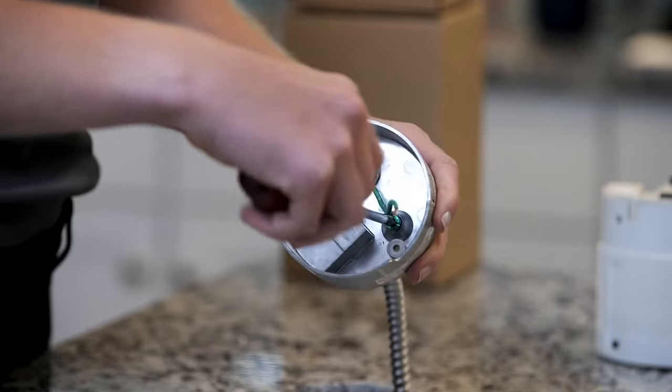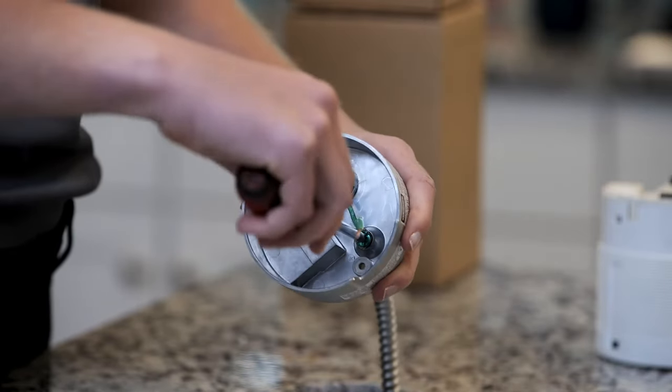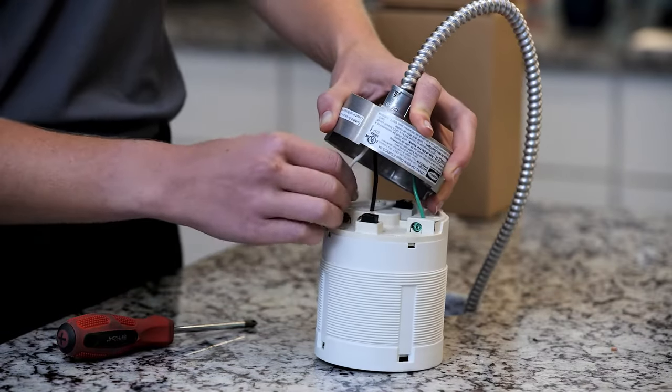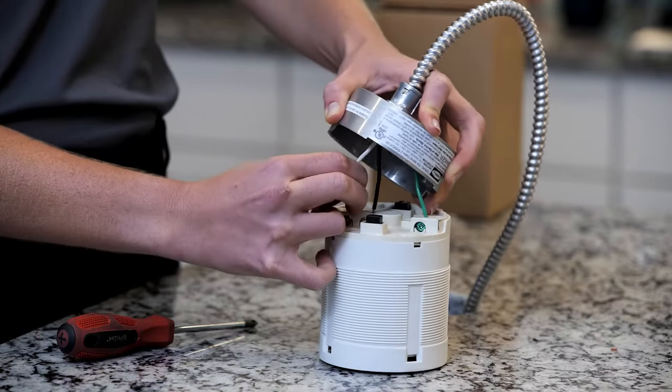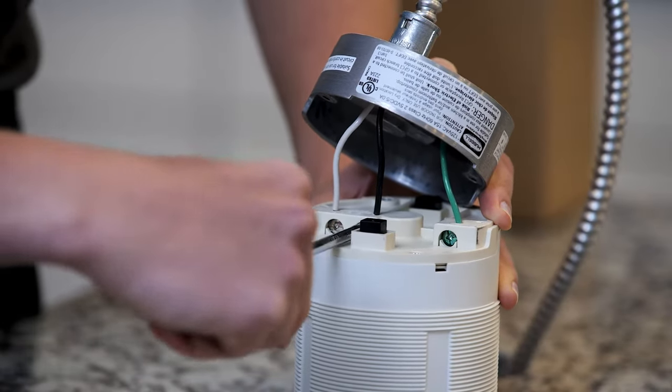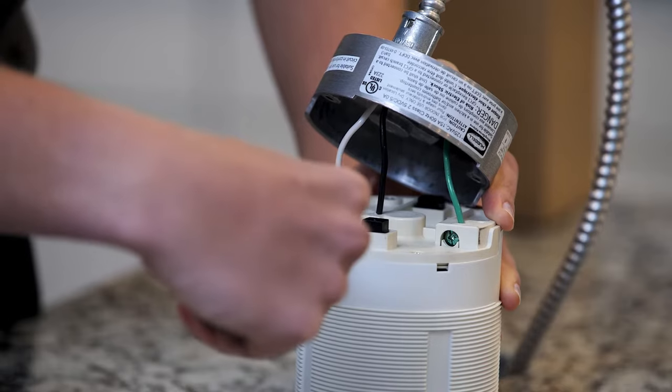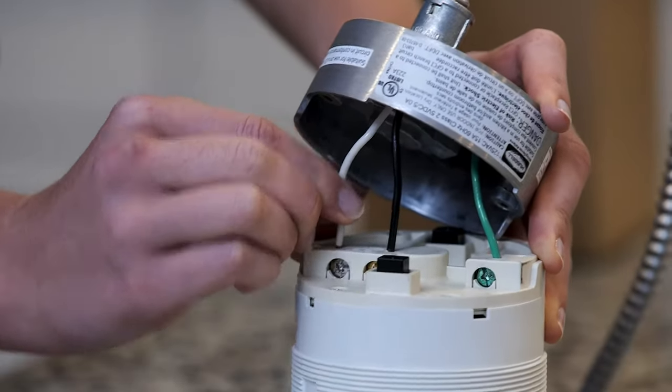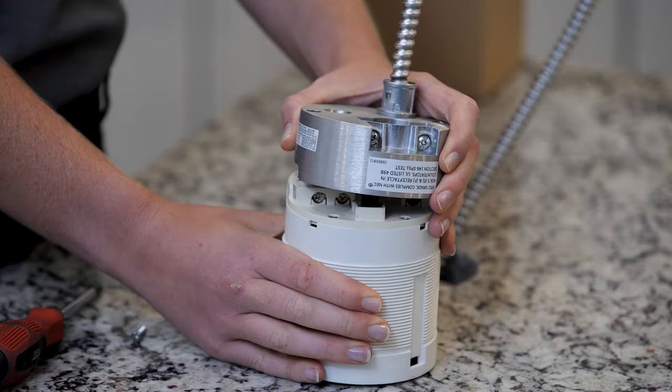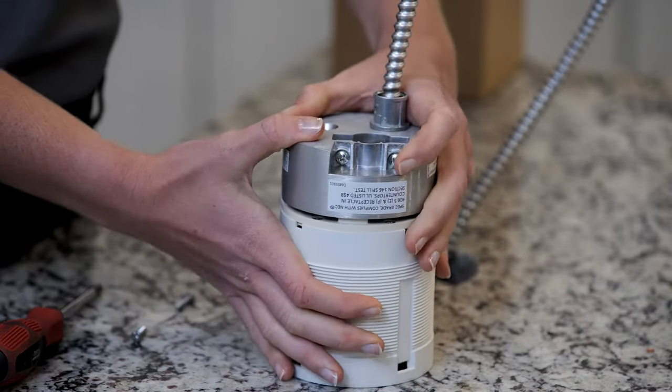Ground the base by bonding the green or bare wire to the green grounding screw. Terminate the white or gray wire to the white screw marked white and black or red wire to the brass screw marked hot. Reattach the base to the housing and secure with screws.